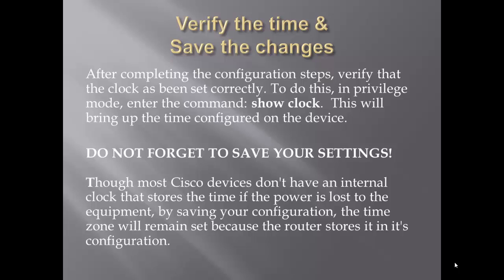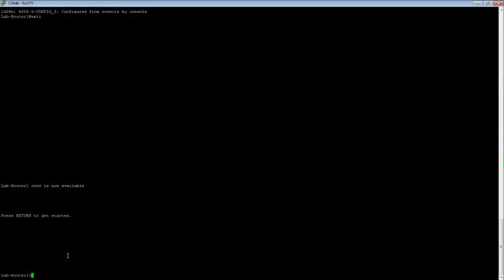Let's go ahead and show how the configuration of the clock is actually handled. To configure the clock on our device, we first must get into our global configuration mode. Once there, we will configure the time zone and the daylight saving settings. After we complete that, we will back out into the privilege mode where we will set our actual clock itself.